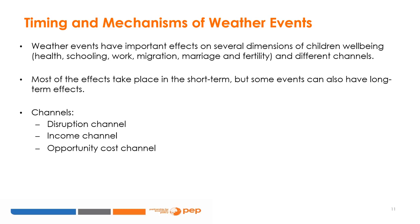Most of the effects we describe take place in the short term, meaning immediately after or a short time after the weather shock. But some can also have long-term effects, meaning they can affect a person throughout their entire life. This is the case with weather shocks experienced by children when in utero or in the first years of childhood, which can affect their human capital at adult age. A weather event can affect economic outcomes through three main mechanisms.